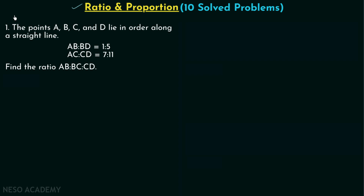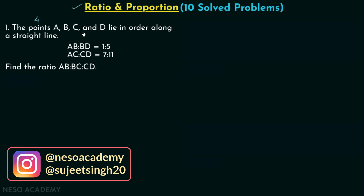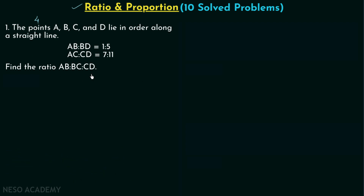In problem number one, we have four points A, B, C, and D, and these four points lie in order along a straight line. It is also given that AB ratio BD is equal to 1:5, and AC ratio CD is equal to 7:11. We need to find the ratio AB:BC:CD. Before I explain the solution, pause this video and try to find the ratio on your own.